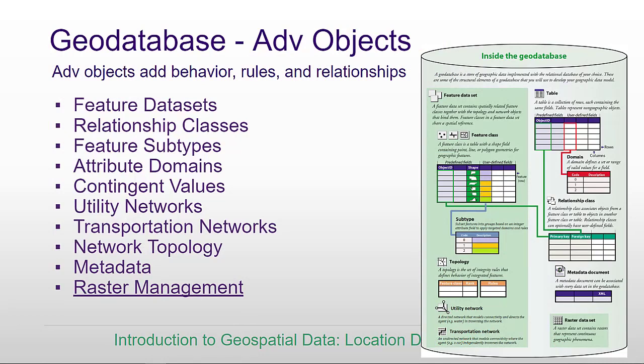A raster data set is pretty easy to work with if it's small, but sometimes we'll download all the imagery for Texas, and suddenly it can become really unwieldy. So we need an advanced GeoDatabase object to help us with raster management.